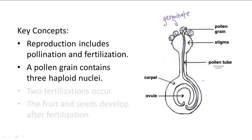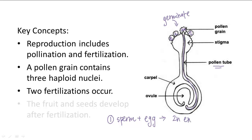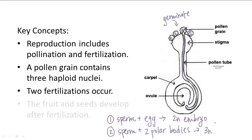There are two sperm nuclei for a reason — during fertilization, each sperm cell is involved in a separate fertilization, and this process is called double fertilization. The first fertilization is one sperm cell joining together with the egg cell to create a diploid embryo, which is what we commonly know as fertilization. The second fertilization is the other sperm nucleus joining together with two separate haploid polar bodies within the ovule, creating a triploid or 3N endosperm, also called the cotyledon, which serves as the food or nutrients for the embryo.